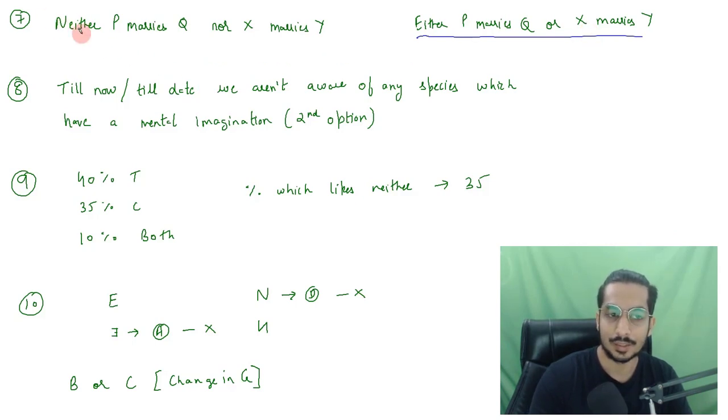We had to give the answer which negates this statement or which proves this statement to be untrue. I think the answer was neither P marries Q nor X marries Y because it is given either P marries Q or X marries Y. That means someone is getting married. So, this statement negates this particular statement. This was the seventh question.